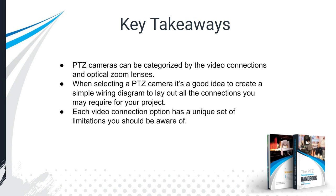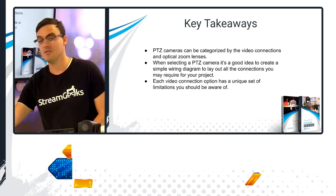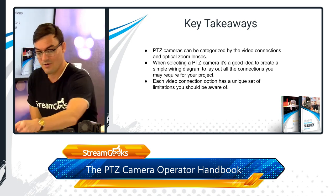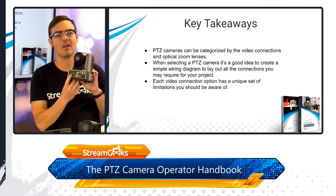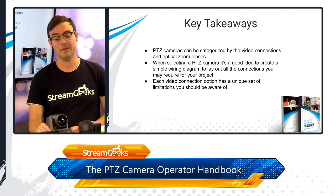Key takeaways here: PTZ cameras are generally categorized by their video outputs and their optical zoom lenses. You might have two or three cameras with the same exact outputs but different lenses, and that's something you'll need to select between. When selecting a PTZ camera you might want to create a simple wiring diagram, which we'll go over in this course, to understand how everything works together. Also, each video connection has a unique set of limitations — for example, SDI has a specific cable run distance, ethernet can go 100 meters, and USB can only go a few feet.